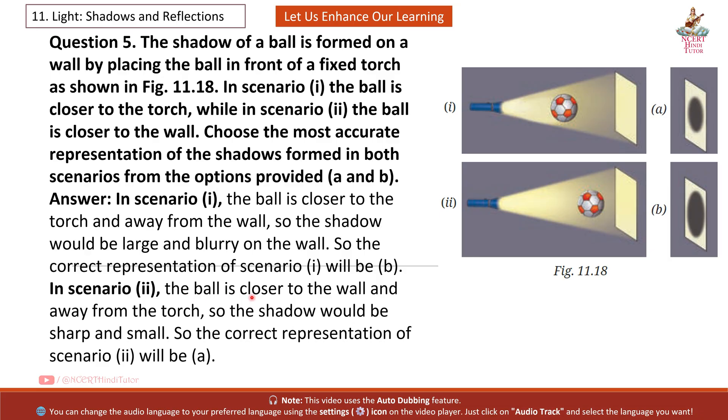In scenario 2nd, the ball is closer to the wall and away from the torch. So the shadow would be sharp and small. So the correct representation of scenario 2nd will be A.